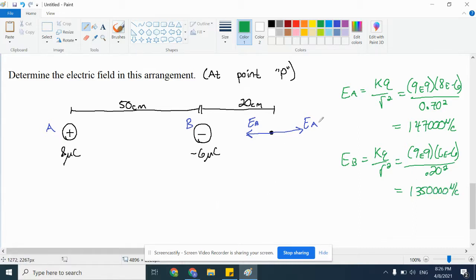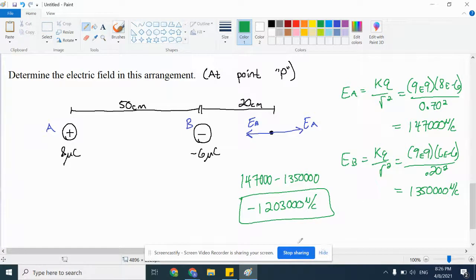So, the final thing is to say, alright, EA is to the right, EB is to the left, so we'll go 147,000 minus 1.35 million. And the result is going to be a negative 1,203,000 newtons per coulomb. Since it is negative, that would mean the field is to the left.